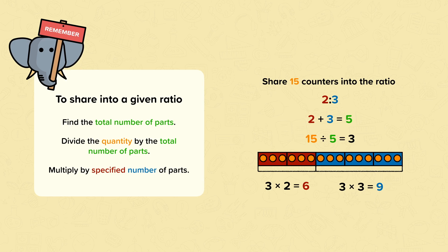Multiply by specified numbers of parts: 3 times 2 equals 6, and 3 times 3 equals 9.